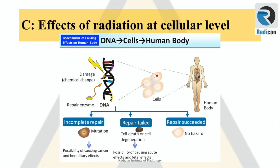When radiation hits a cell, it may damage the DNA inside, but such damage is repaired by inherent human body mechanisms. Minor damage is successfully repaired and DNA is restored, as seen on the right side of the picture. In certain instances the cells cannot be fully repaired and they die, but if other cells can replace them, the body recovers.